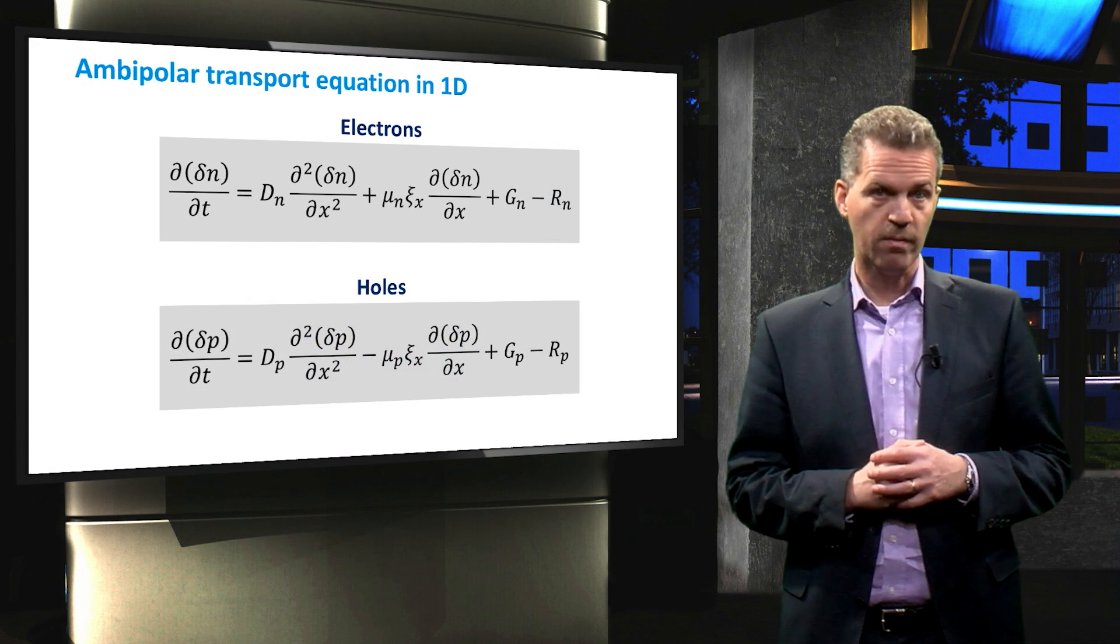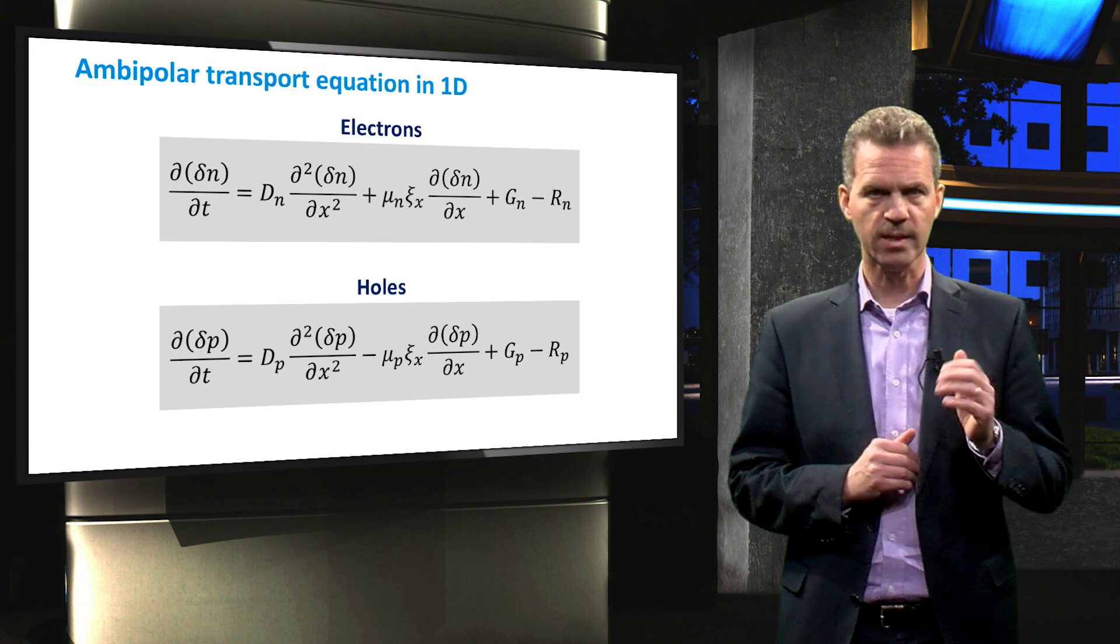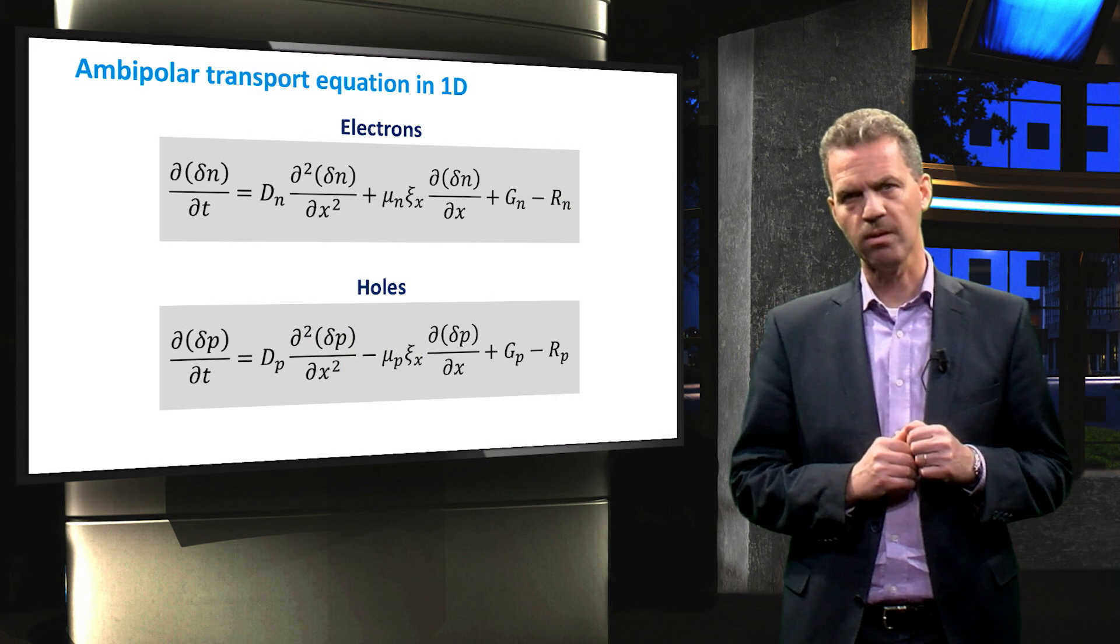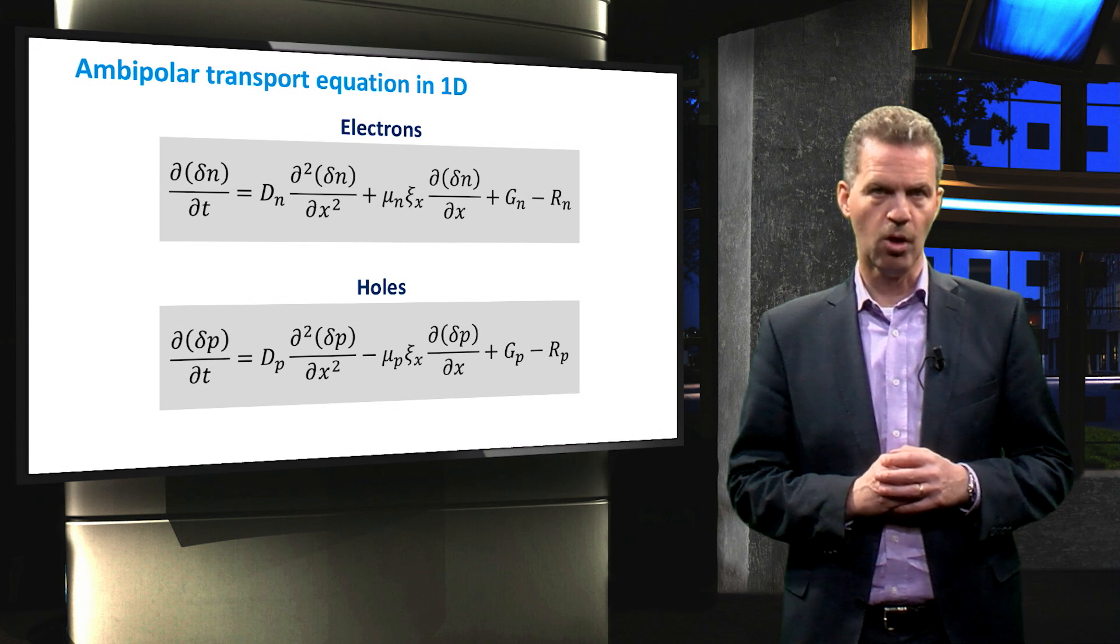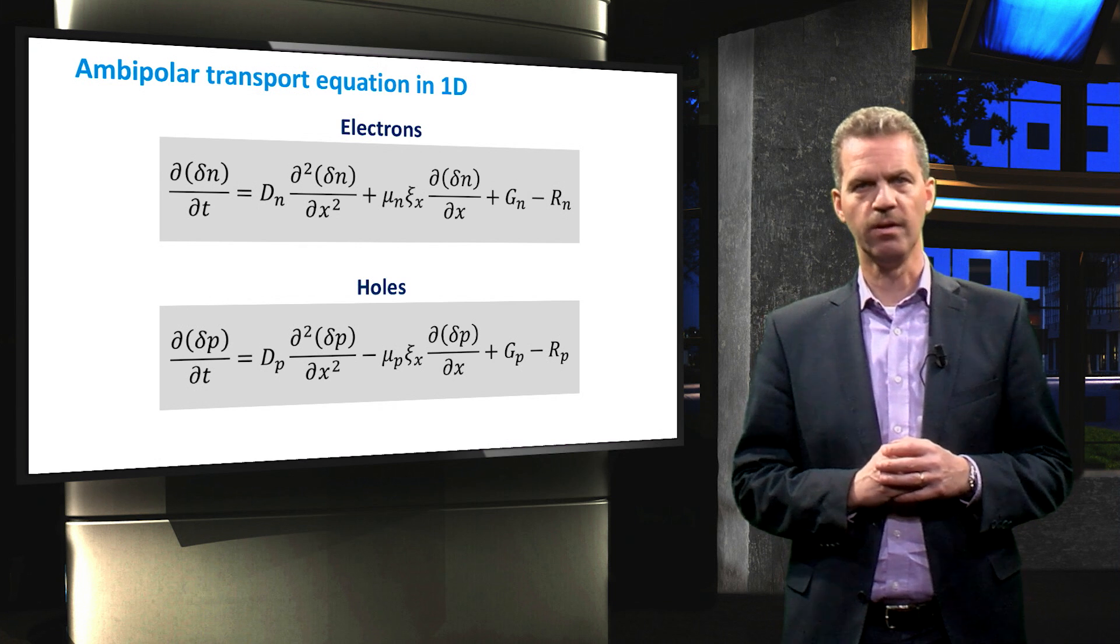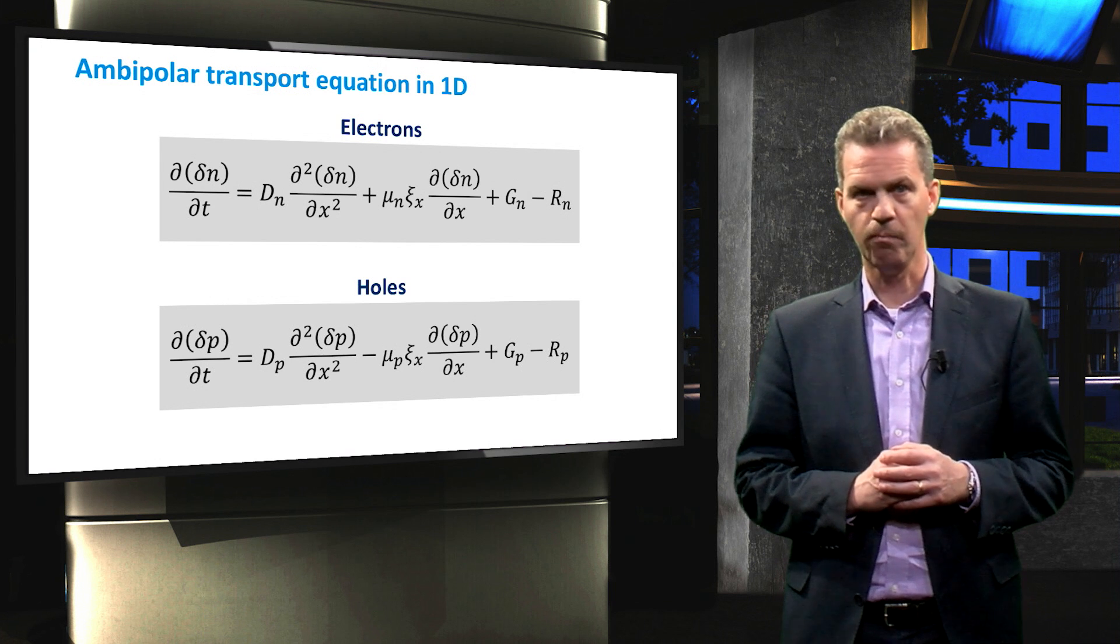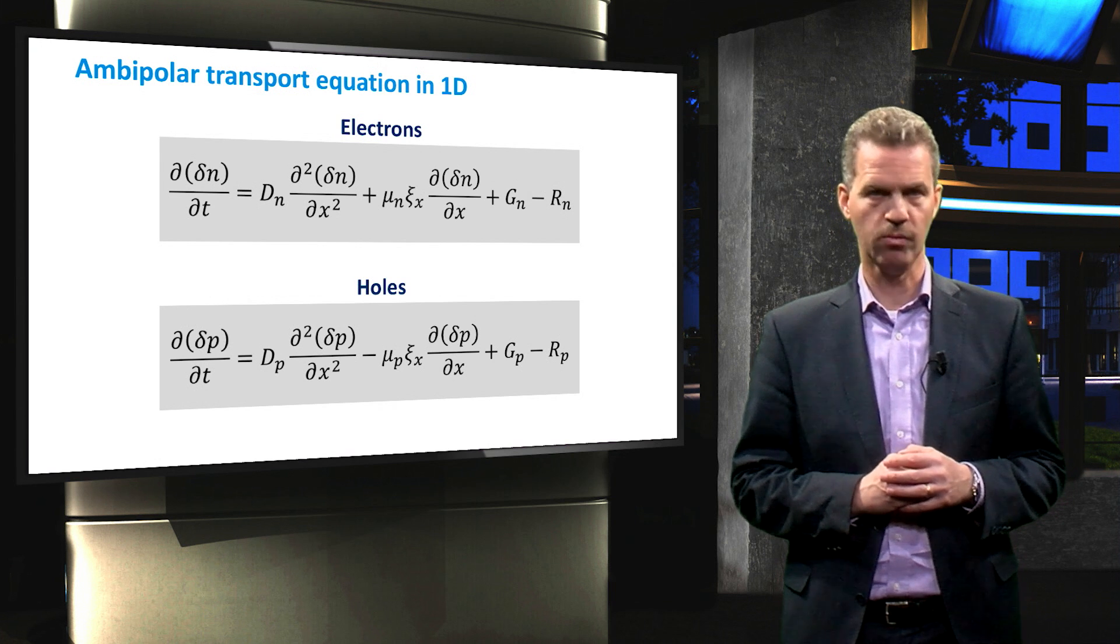The same derivation can be applied for holes, leading to more or less the same equation, except that the drift term is now negative. This is because of the opposite effect the electric field has on positively charged holes compared to negatively charged electrons.